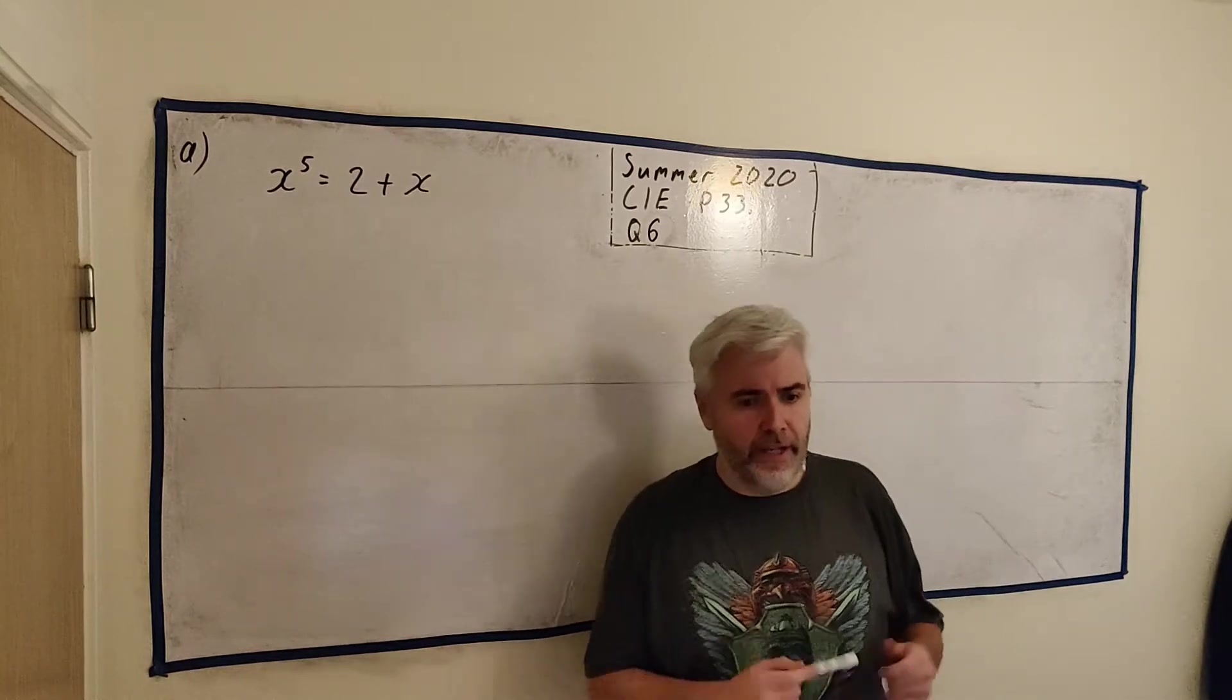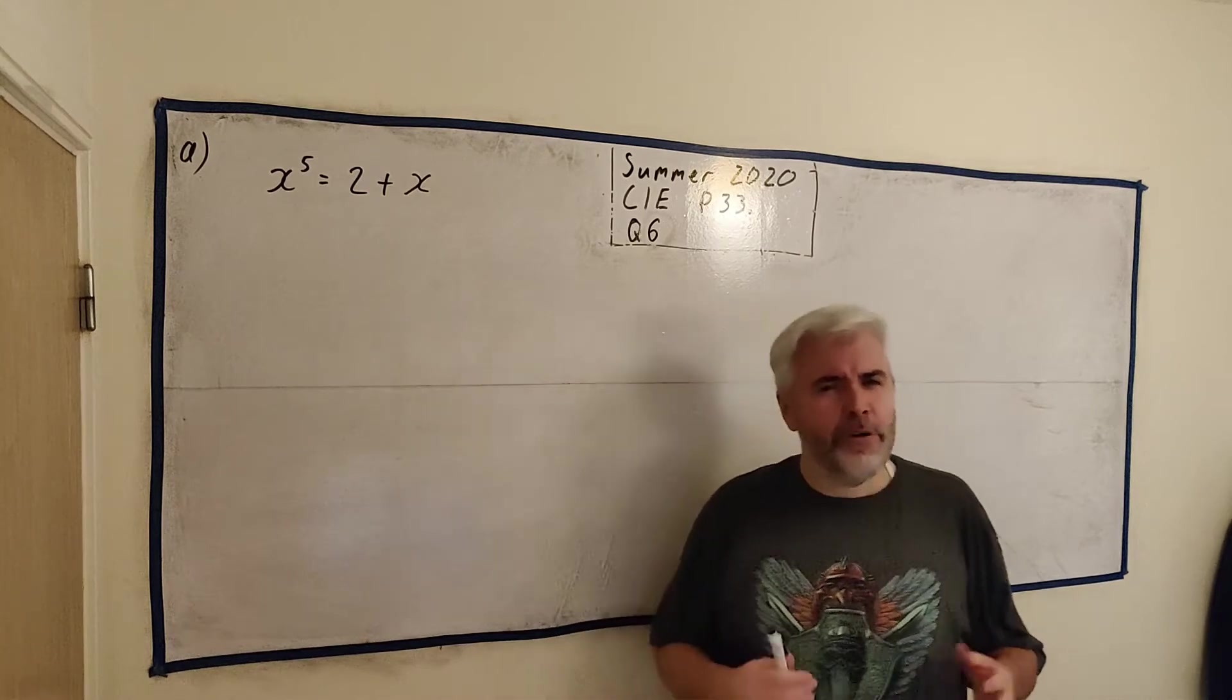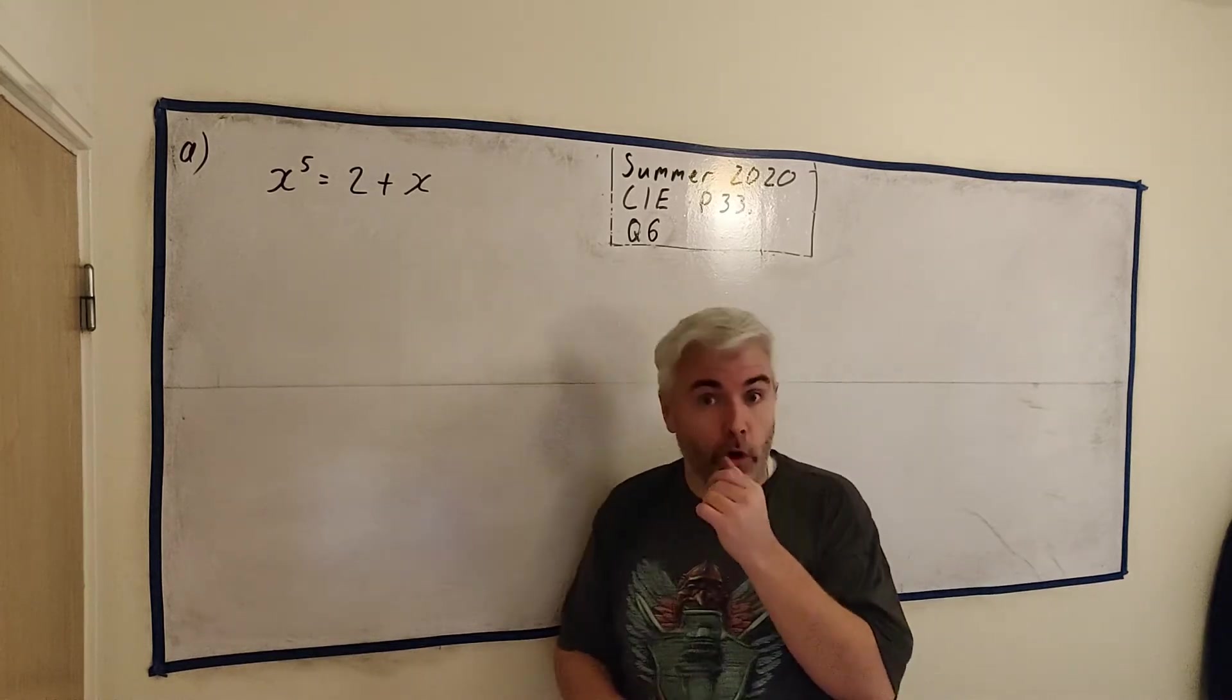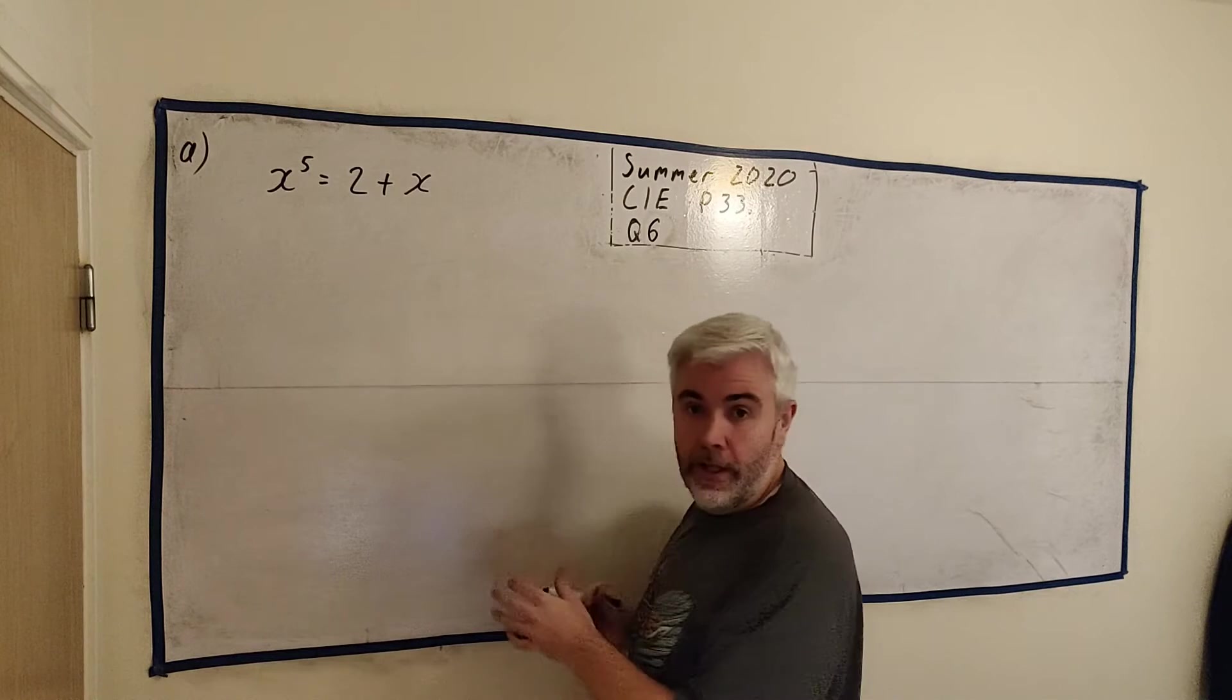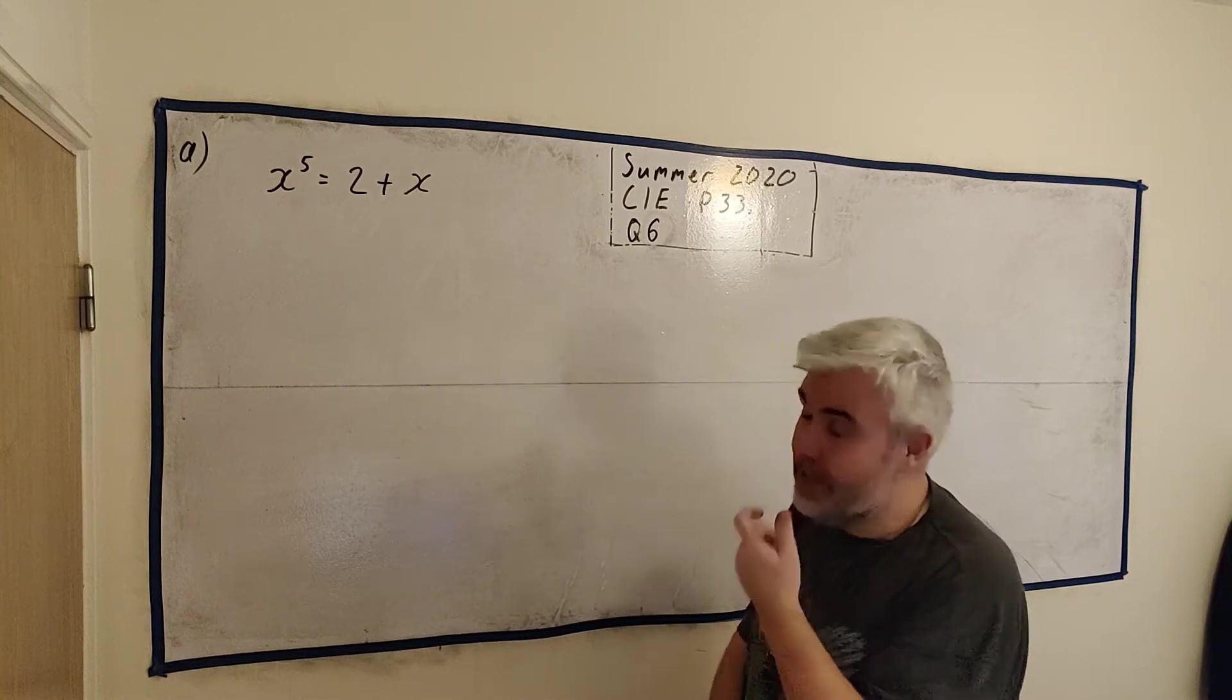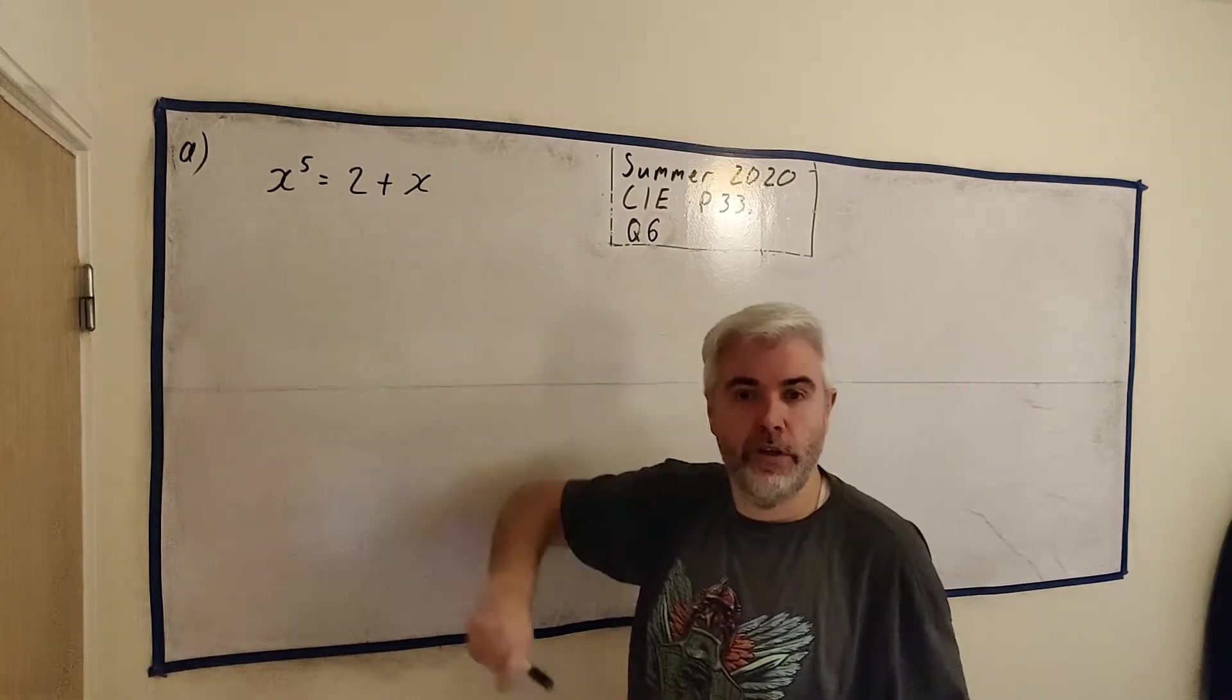This is a multi-part question that involves using the iterative formula to solve this equation. But just for part A they'd like us to sketch two graphs that would show that this has exactly one root to it. So what they mean by that is they want us to graph both sides of this equals. If we graph both sides of the equals we see where they meet each other and that would be the solution to an equation.